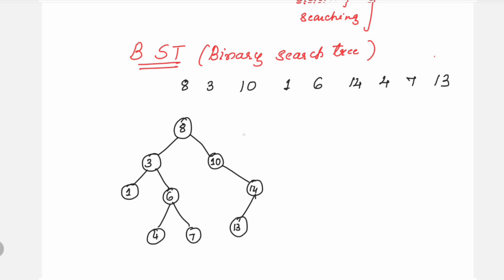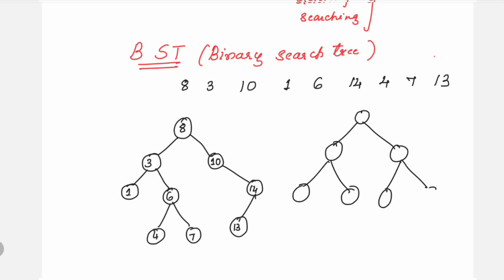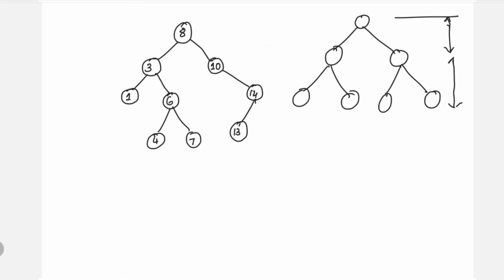This is one of the resulting trees from the given elements. You may have trees with just two levels. Sometimes the binary search tree may not have two levels, but may result in many levels.